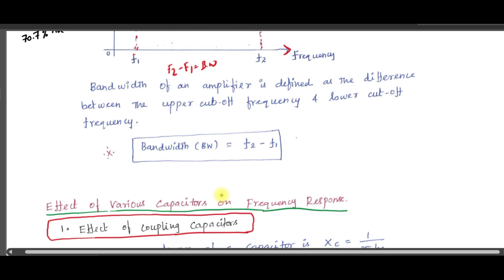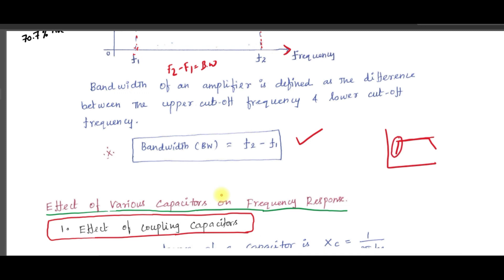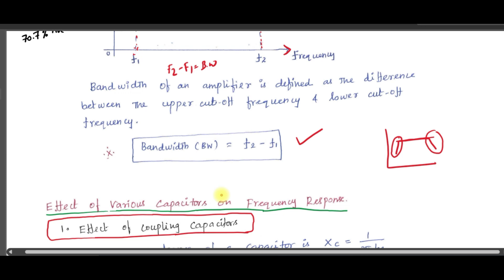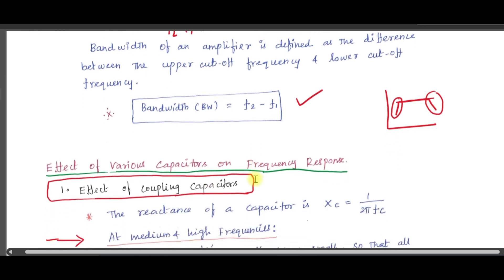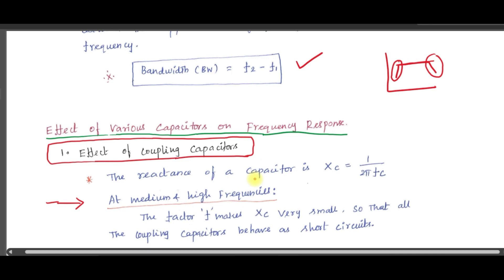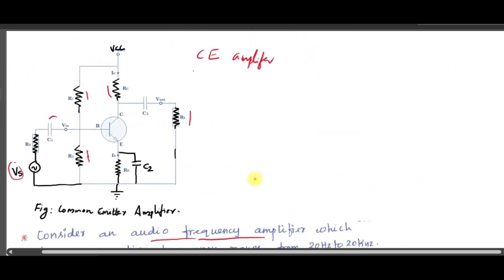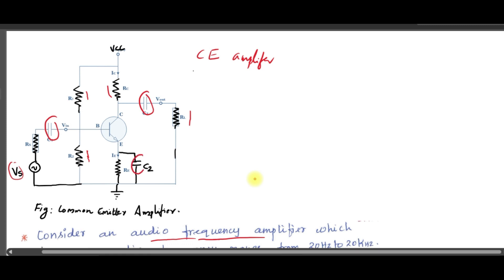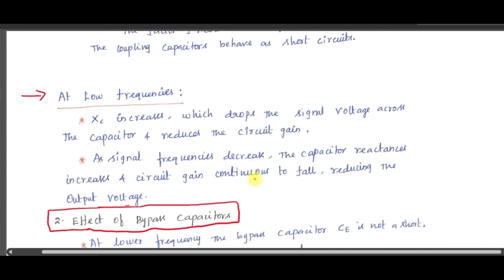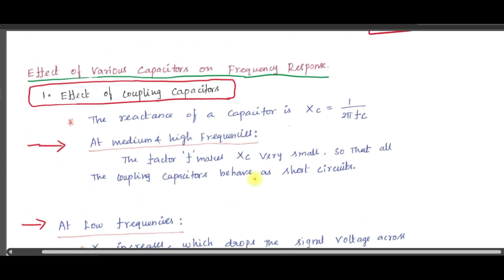Now we will analyze why the frequency response curve has this shape — constant gain in the mid-frequency region, with drops in the lower and upper frequency regions. To understand this, we need to look at the effects of the various capacitors in the common emitter amplifier. There are three main capacitors: C1, the input coupling capacitor; C3, the output coupling capacitor; and the bypass capacitor in the emitter side, in parallel with resistance RE.